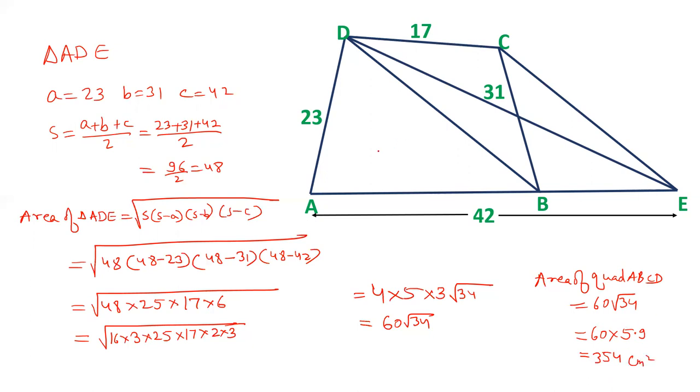This is the area of quadrilateral ABCD. The property here to be used was that triangles located on the same base and between the same parallel lines are equal in area. That is the important point.